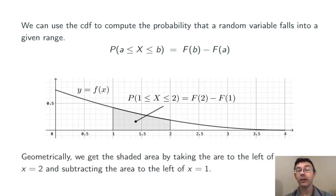Here, I'm getting the shaded region by taking the area to the left of x equals 2 and subtracting off the area to the left of x equals 1. That is to say, big F of 2 minus big F of 1.